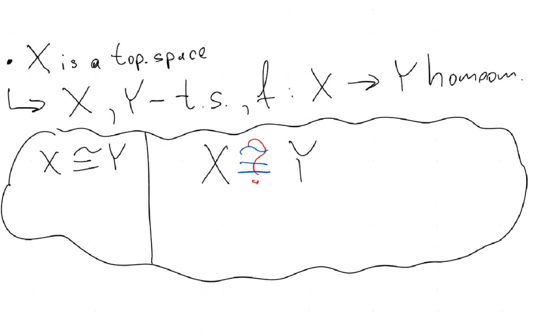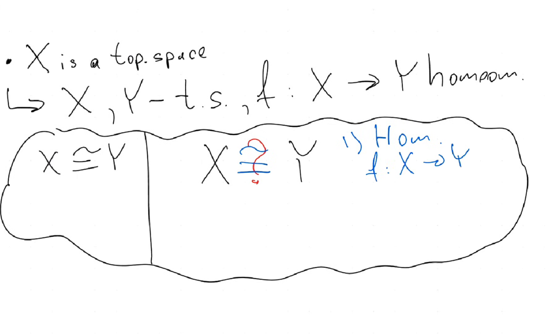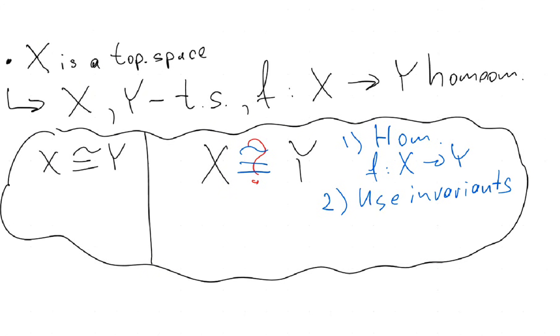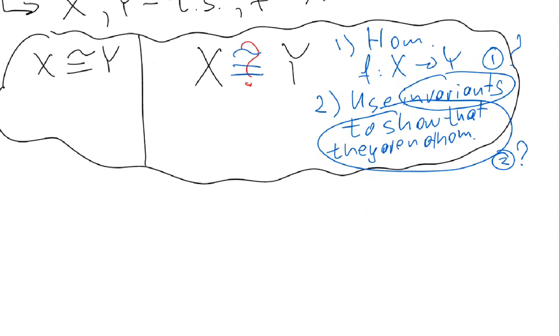So one of the ways: to show it's homeomorphic, you can show the existence of a homeomorphism. But the second thing, you can use invariants to show that they are not homeomorphic. So what is an invariant? It stays constant under homeomorphism.